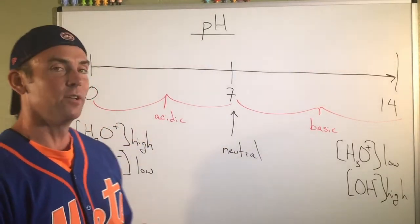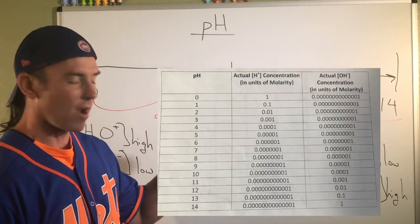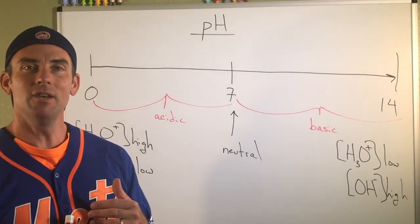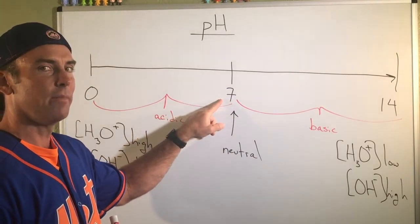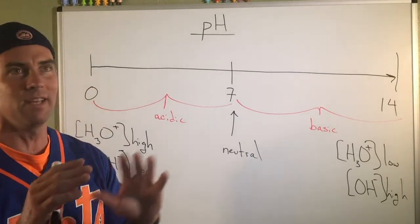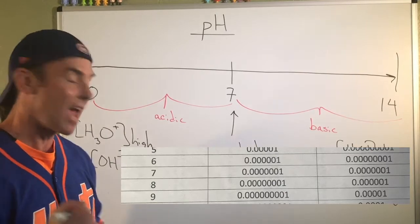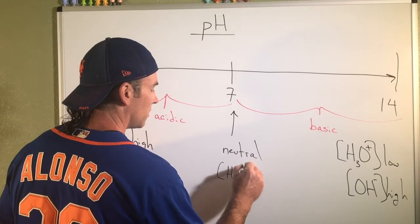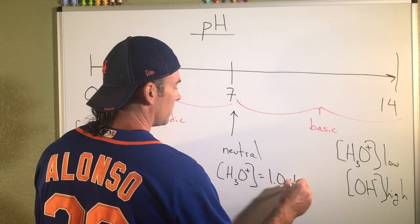And one of the things I'd really like you to do, and I'll probably put it as a screen grab right over here, is I want you to look at one of the resource guides and notice what happens at that pH of seven. That's that perfect place where the concentration of OH- is perfectly equal to the H3O+ concentration.